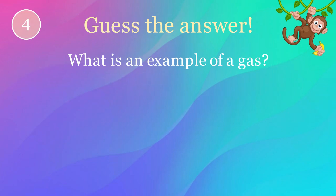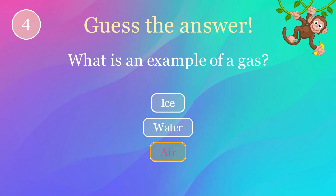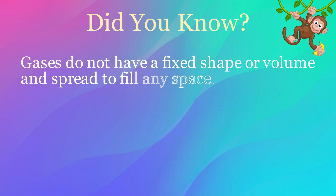What is an example of a gas? Options: ice, water, air. The correct answer is air. Here's an interesting fact: gases do not have a fixed shape or volume and spread to fill any space.